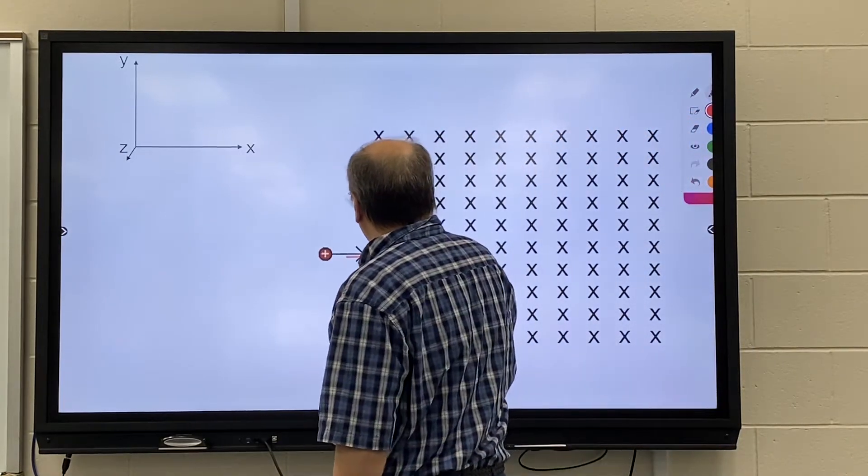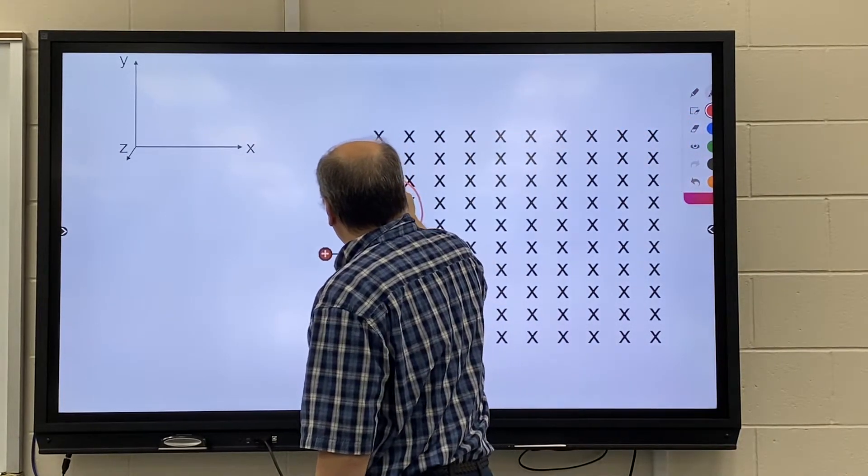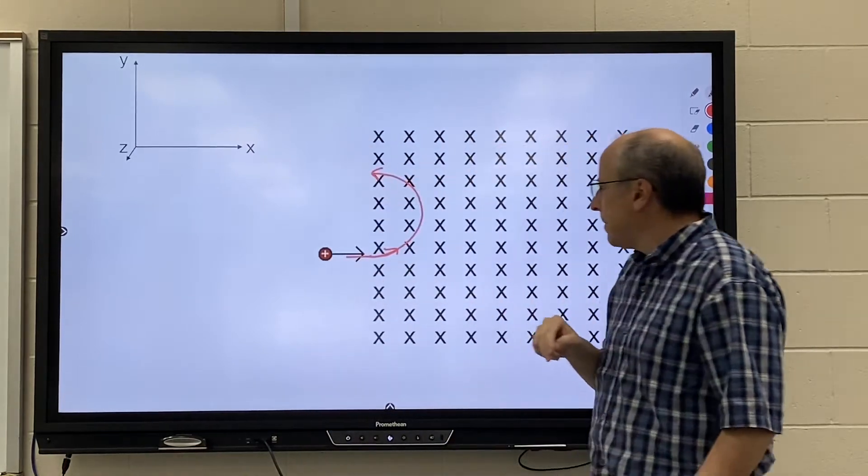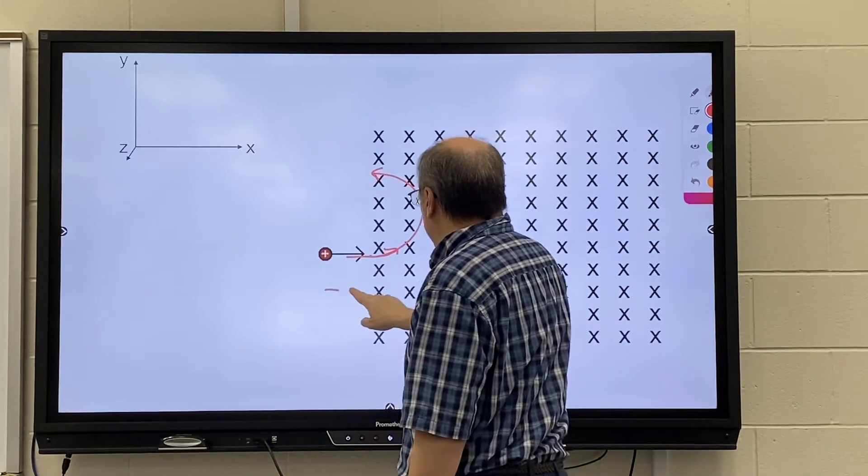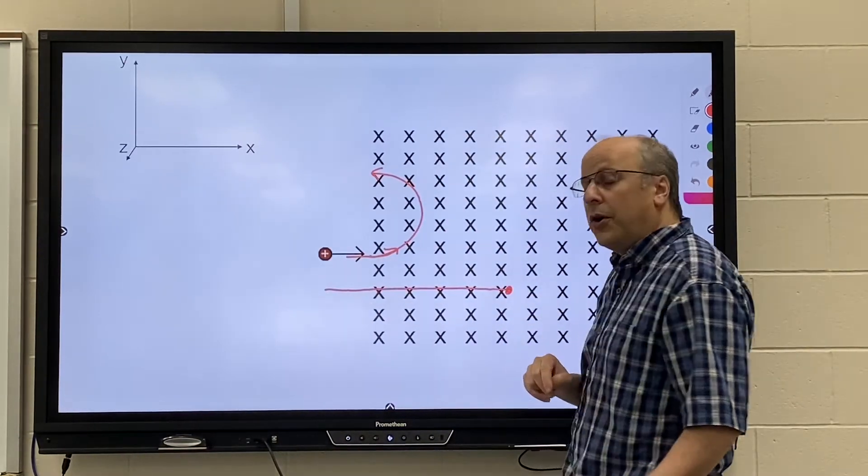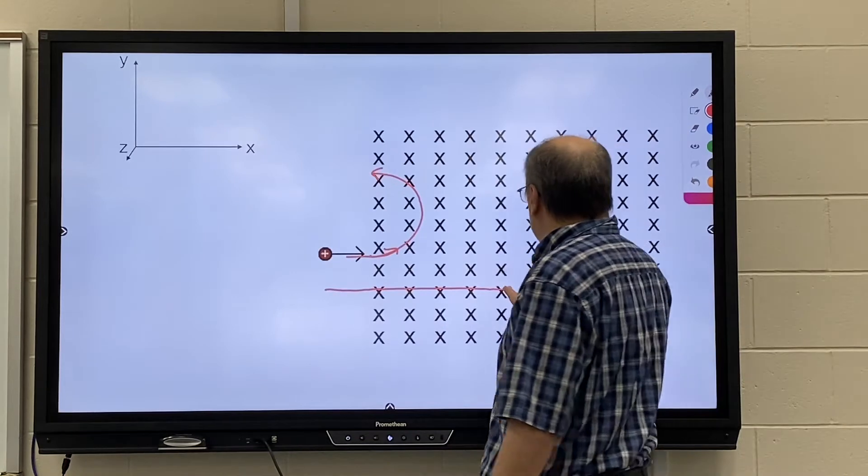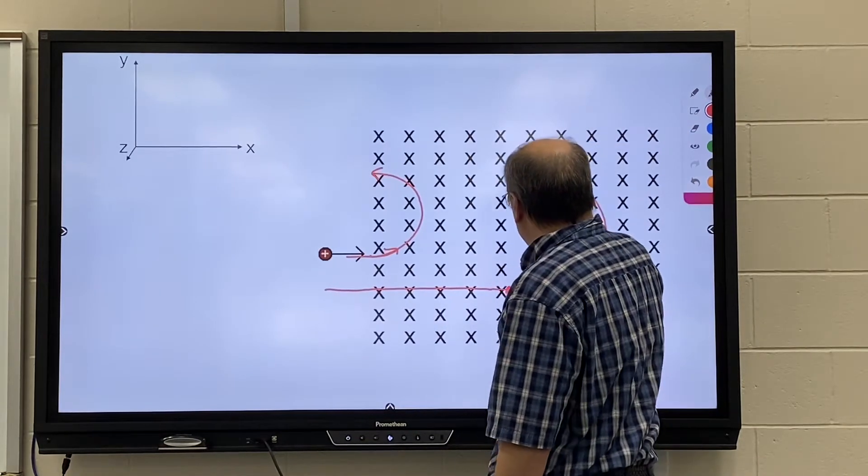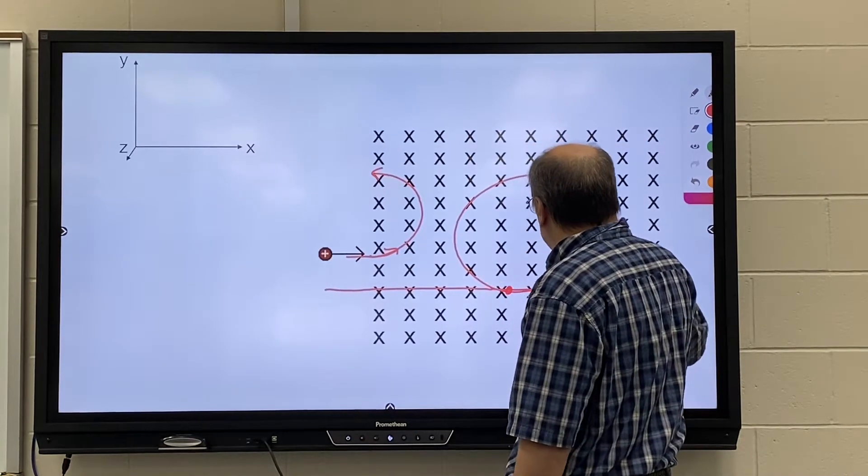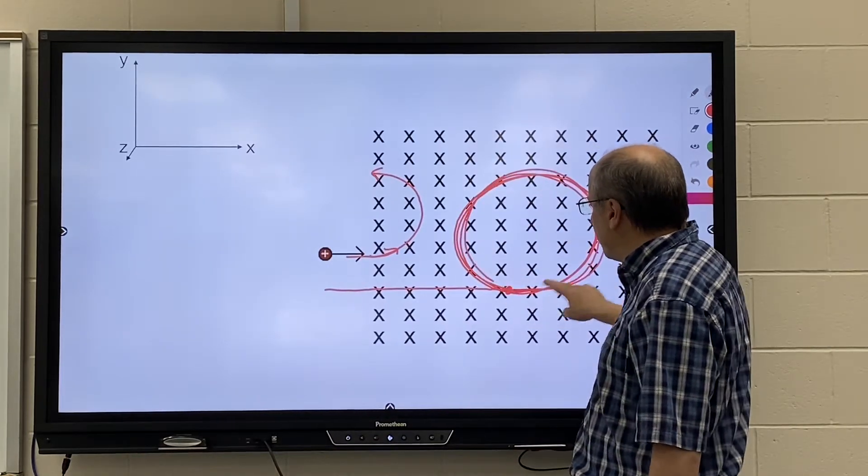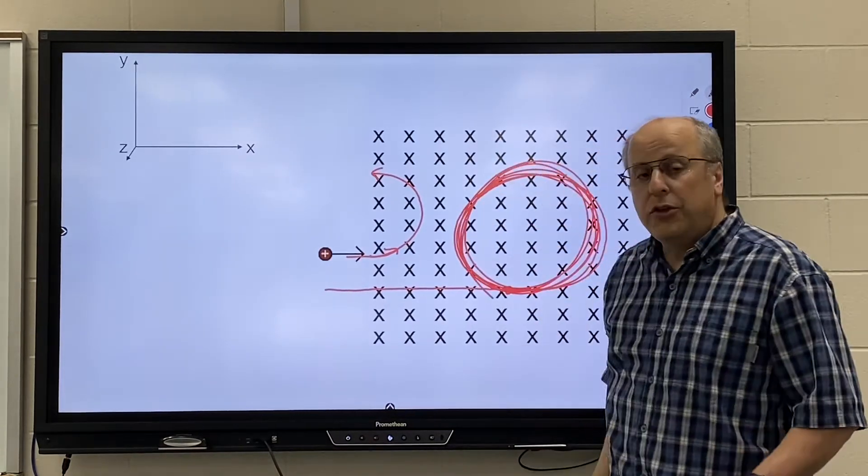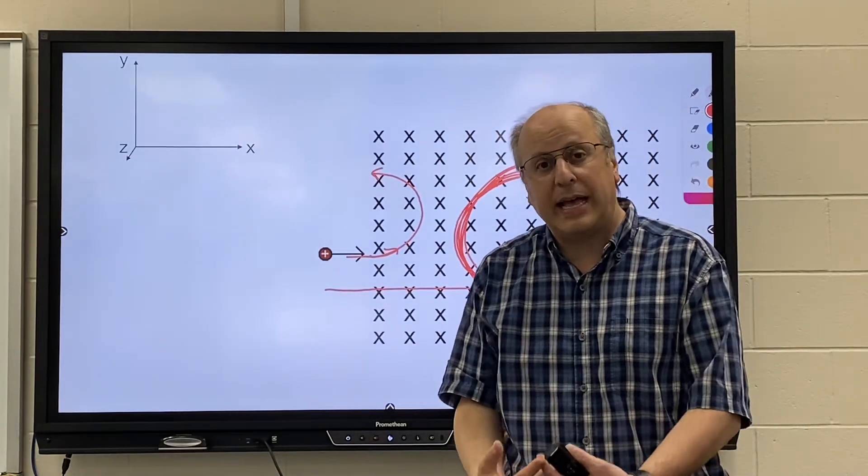This thing would follow a partial circular arc. If, however, we waited until the charge was inside the field to turn on the field, we could actually capture the particle and have it travel in a complete circular path, and have it continue to travel in that path using the magnetic field as containment.